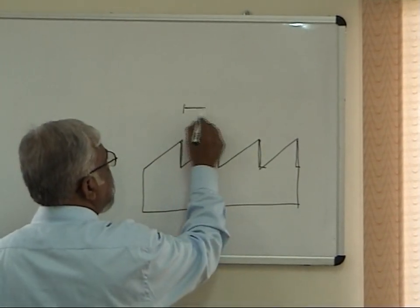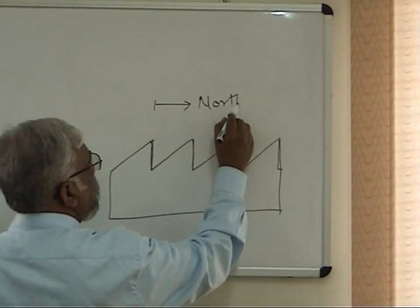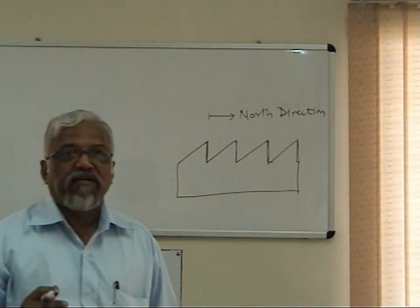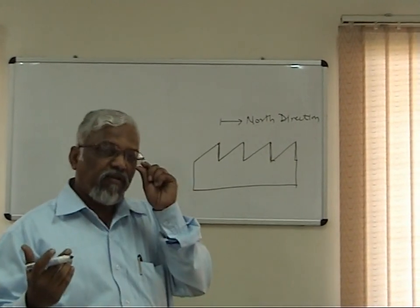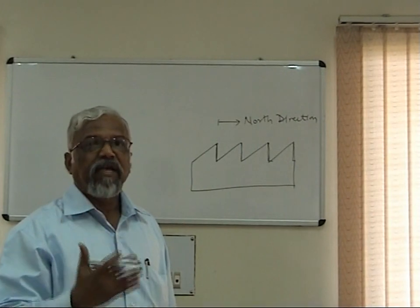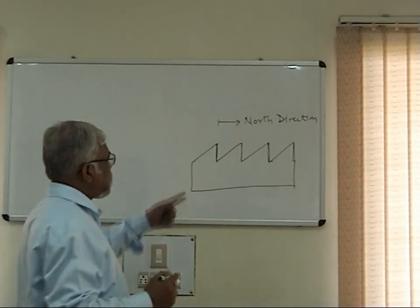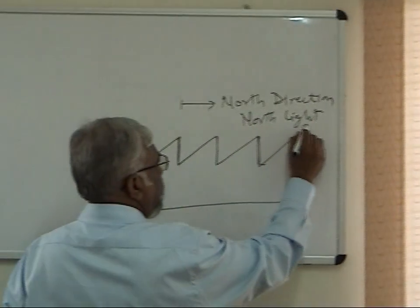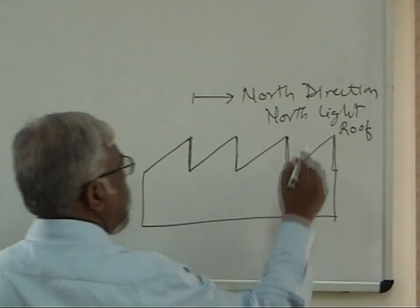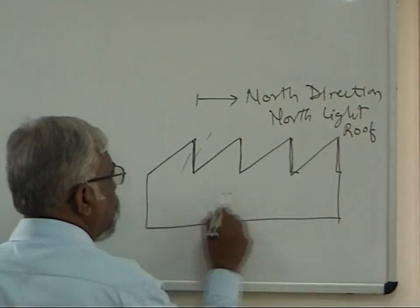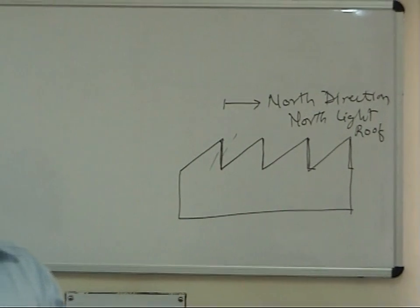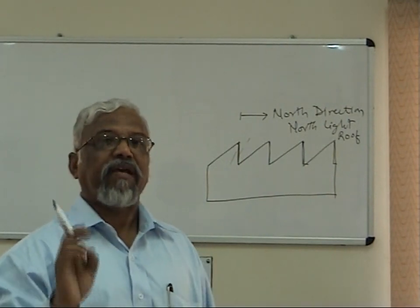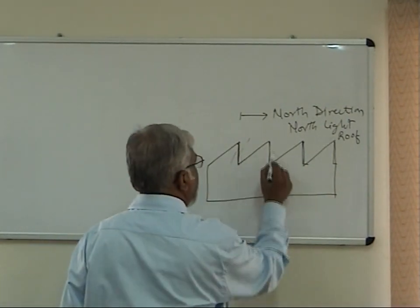This vertical portion faces the north direction. As noted earlier, in the northern hemisphere we normally do not have sun rays coming directly inside the room from the north. So we call this type of roof a north light roof. Only diffused light enters, and the whole interior of the factory is fully illuminated without requiring any artificial lighting. That is why a north light arrangement is a must.